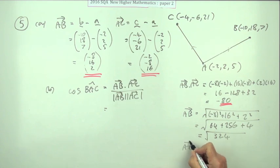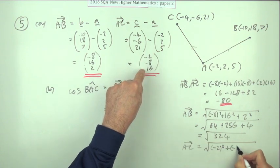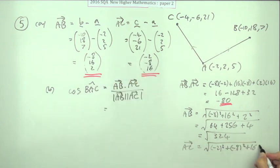Now AC is obviously the same, but I think I'll still put it down to begin with anyway. Negative 2 squared, negative 8 squared, and 16 squared, but I'll just jump straight in with 324. So there's these two answers for the two magnitudes.